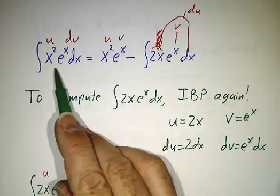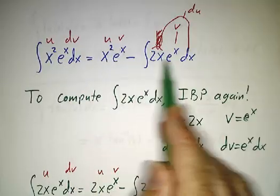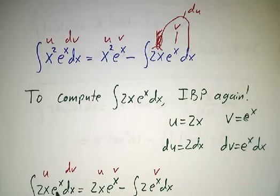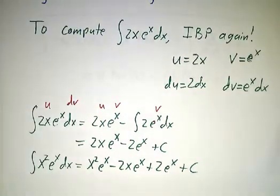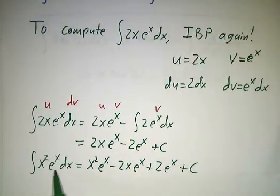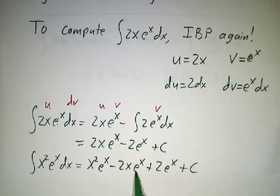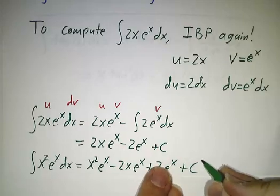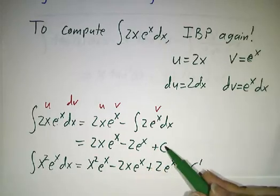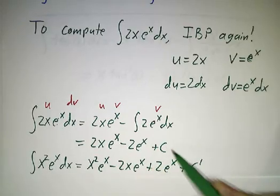So put it all together and we get that x squared e to the x dx. The integral of that is x squared e to the x minus what we had in the previous line. So minus 2x e to the x plus 2e to the x plus a constant. And strictly speaking, this constant is not the same thing as that constant. It's minus that constant. But they're both arbitrary constants.